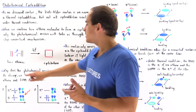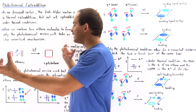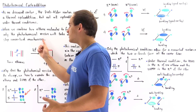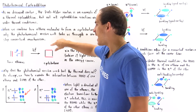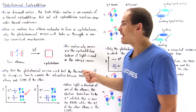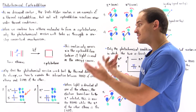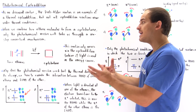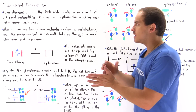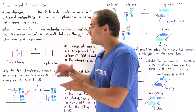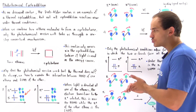We take the two ethene molecules, interact them under light conditions, and form the cyclobutane in a one-step concerted mechanism in which the transition state is cyclic. This is known as a pericyclic reaction. So cycloaddition reactions are pericyclic reactions.